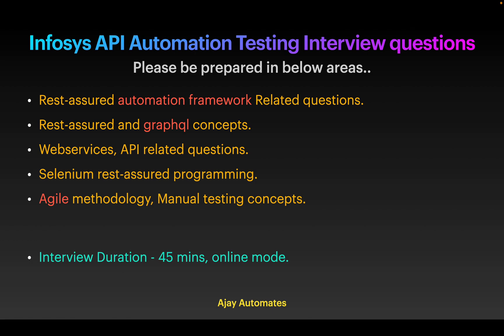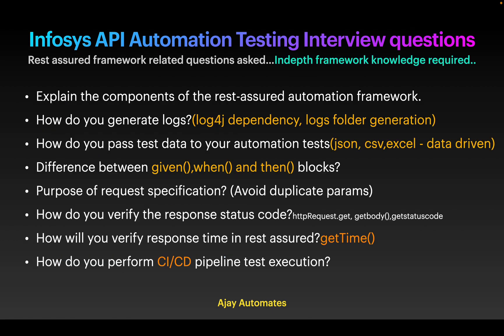So let's see the order in which the interview went. Initially there were questions from automation framework, then there were technical questions from GraphQL, REST Assured, and web services. There was one programming question, and at the end there were questions from agile concepts and manual testing concepts.